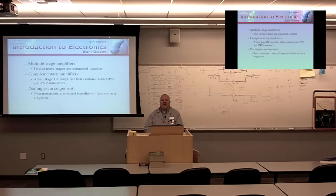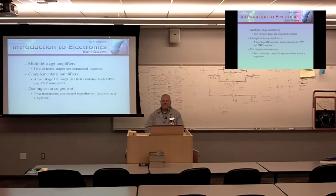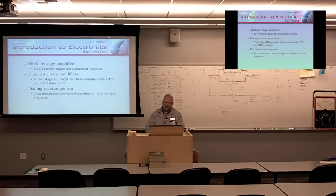You could have multi-stage amplifiers, where two or more stages are connected together. This is typical because, based on what we discussed last chapter, no one transistor configuration meets all of our needs, so we're going to have to use multiple stages. Complementary amplifiers are a two-stage direct coupled amplifier that contains both NPN and PNP transistors.